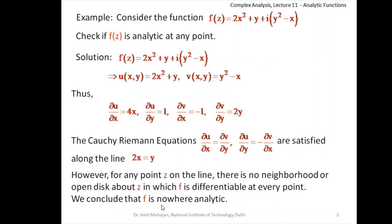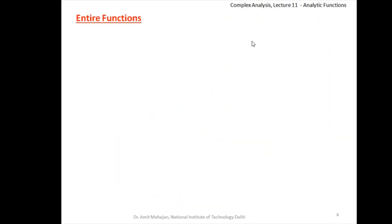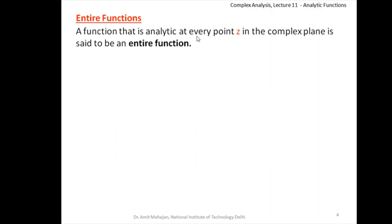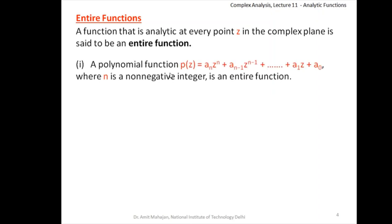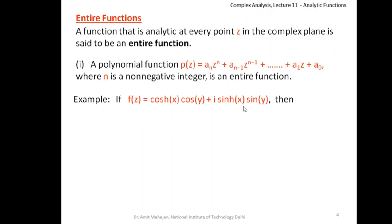So f(z) is nowhere analytic in this case also. Now, a function that is analytic at every point z in the complex plane is said to be an entire function. To be an entire function, the function must be analytic throughout the complex plane. For example, polynomials: if you have a polynomial, then polynomials are differentiable and the partial derivatives are continuous, so polynomial functions satisfy the Cauchy-Riemann equations and are differentiable everywhere. Hence they are called entire functions.